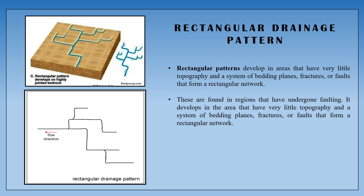Next, the Rectangular Drainage Pattern. This pattern is related to bedding planes and fault lines. It is developed in areas that have very little topography and a system of bedding planes, fractures, or faults that form a rectangular network. Where fault lines are developed, we can see this Rectangular Drainage Network.